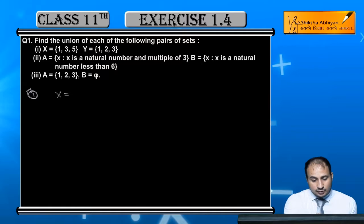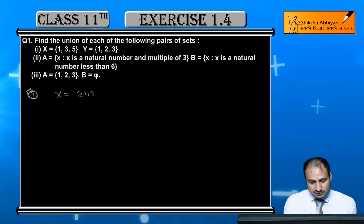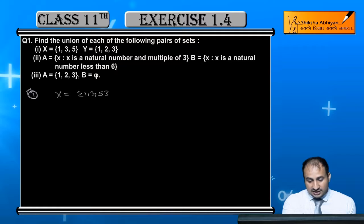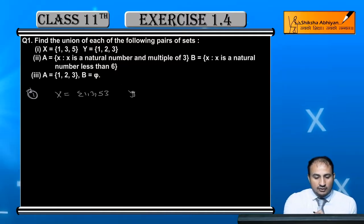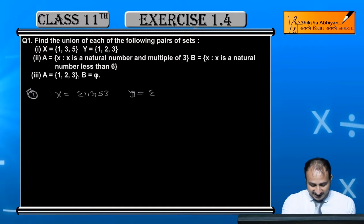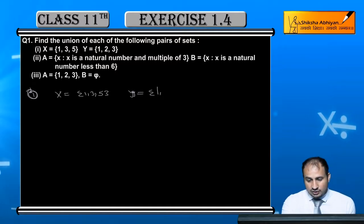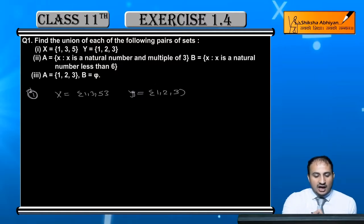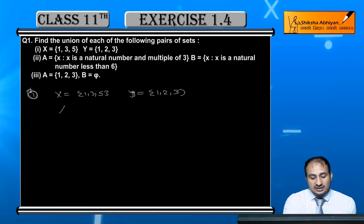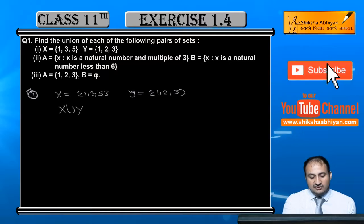Here we have Set X = {1, 3, 5} and Set Y = {1, 2, 3}. Now we will find X union Y.